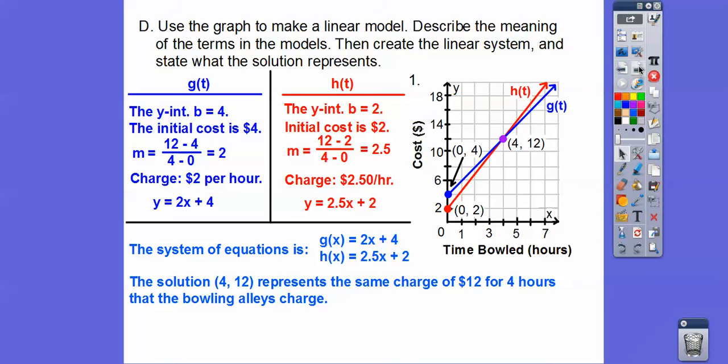The system of equations is given above. The solution where they intersect, four twelve, represents the same charge of twelve bucks after four hours of bowling. Remember, four is the first one, that's our x, so that's how much we bowl. The second one is always our y coordinate, which is the cost. So after four hours of bowling, it's charging twelve bucks.